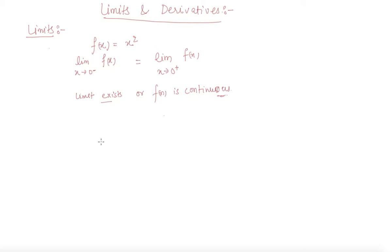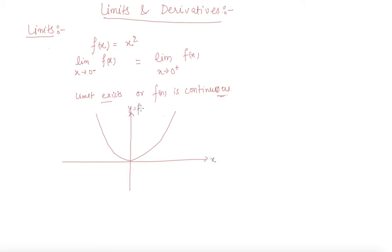If I draw the graph of f(x) = x², this is y or f(x). This is the graph of y = x². Now we need to check whether the left hand limit or right hand limit exists or not. In this case it will exist, as it is clearly seen that the graph is continuous at this point.